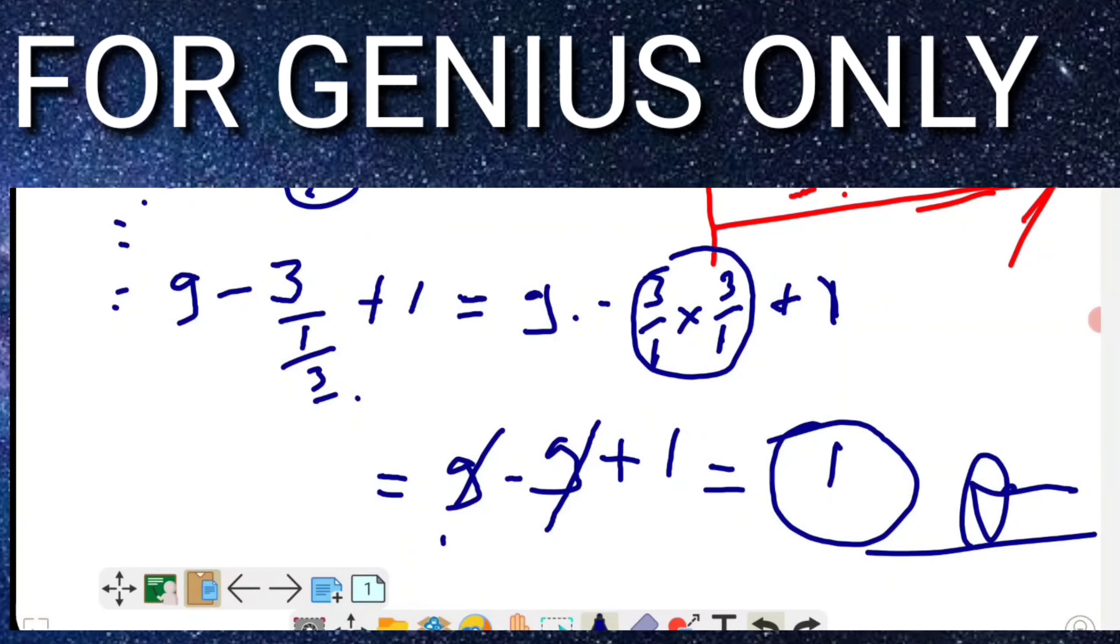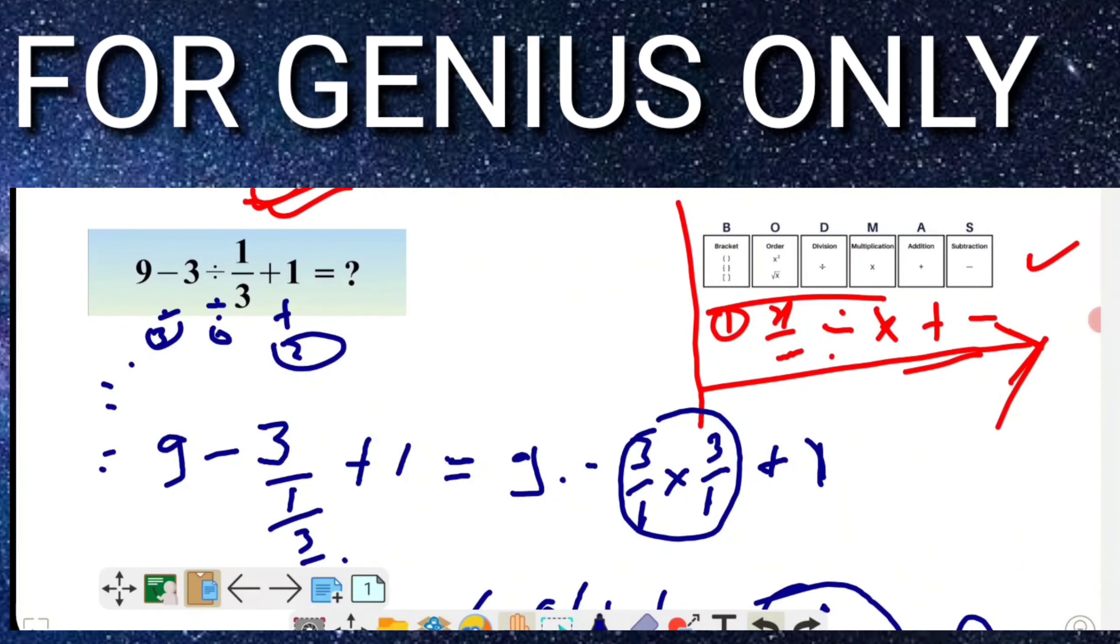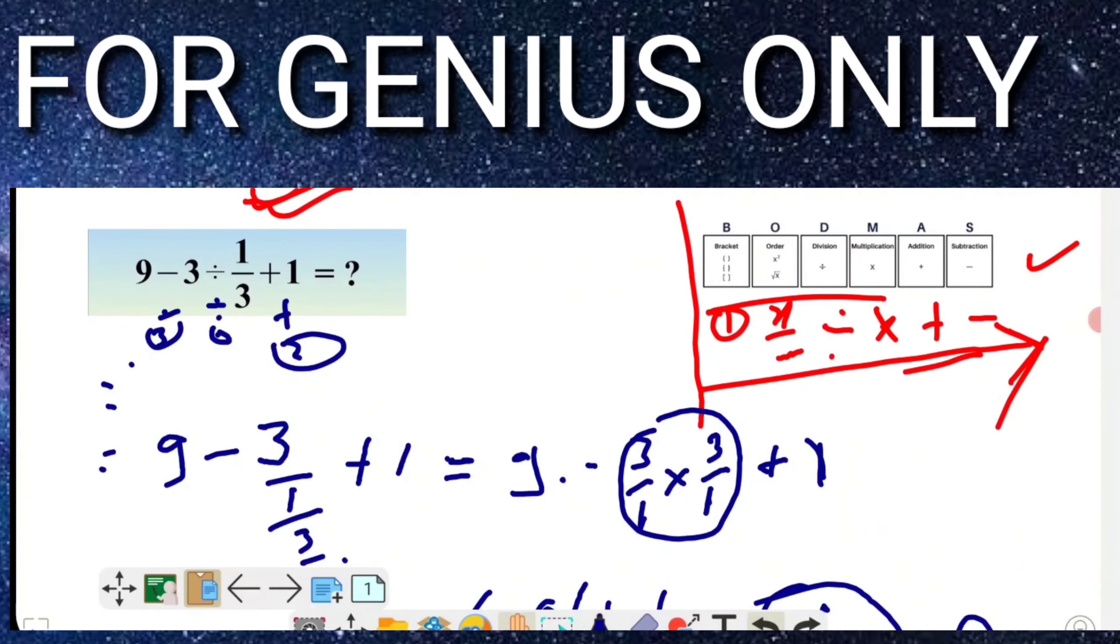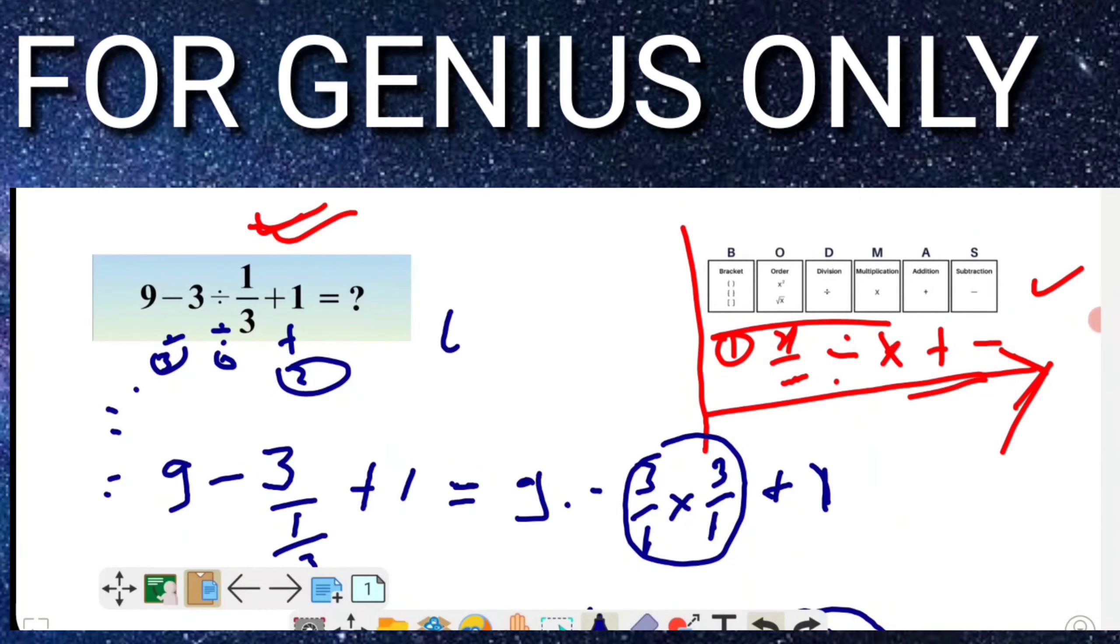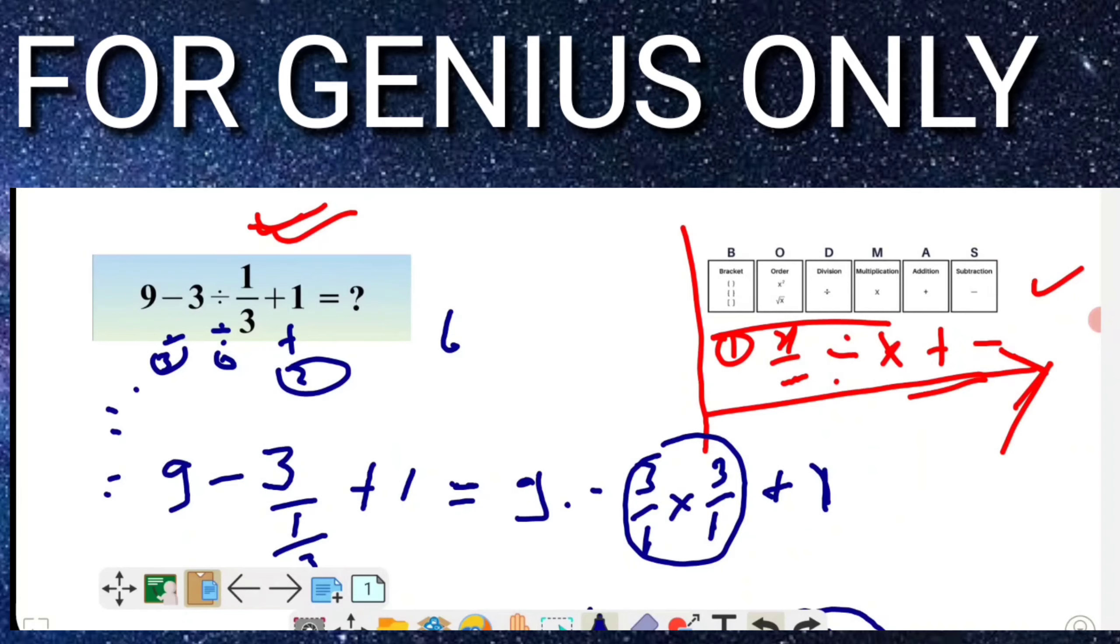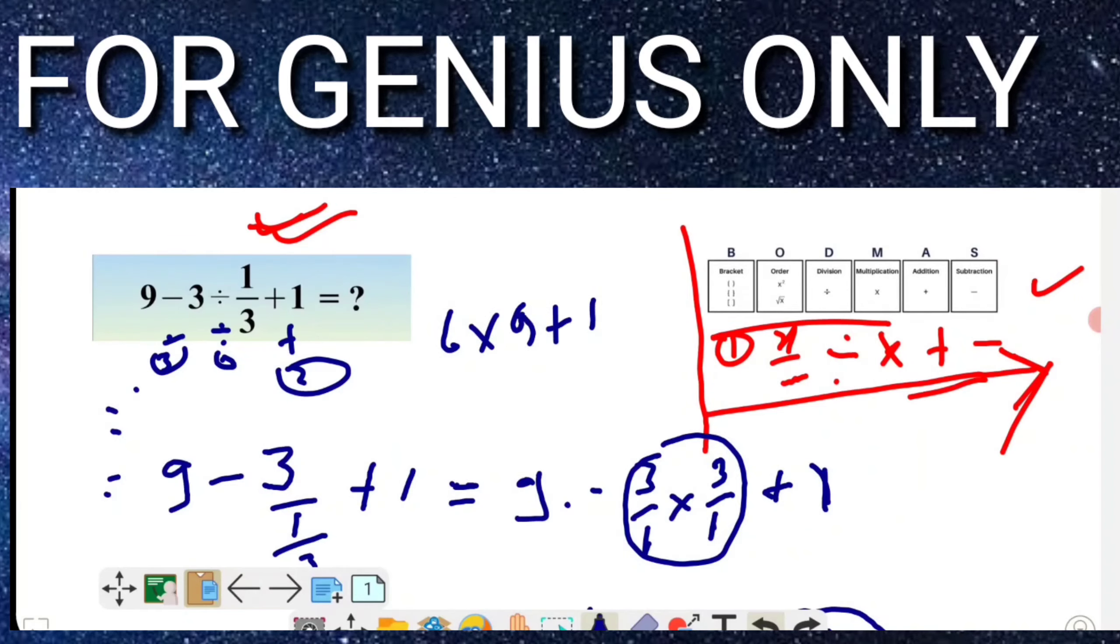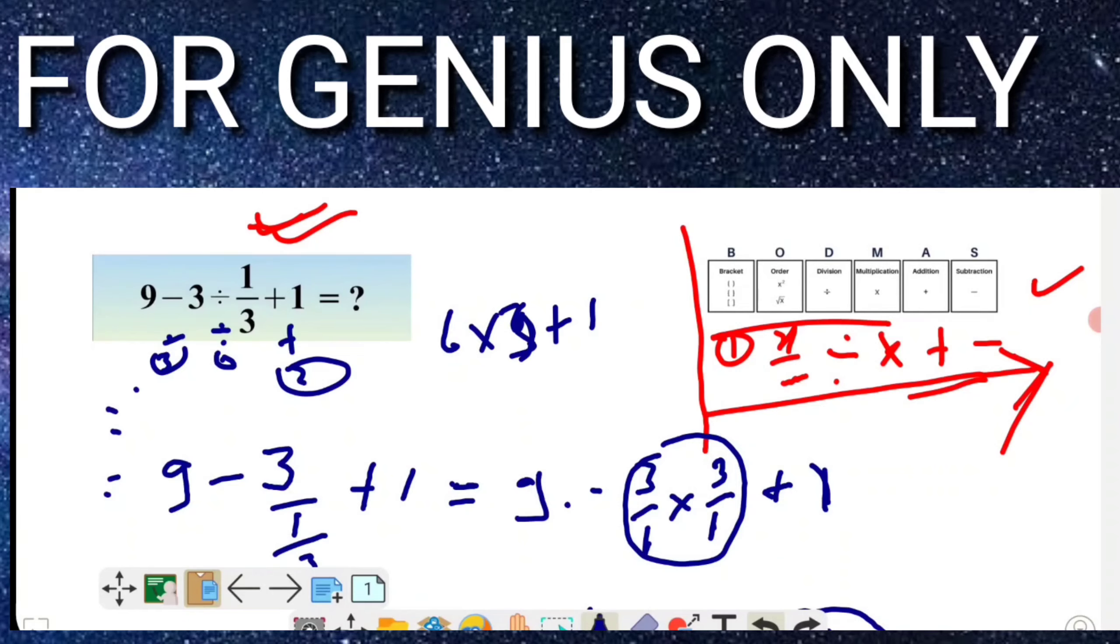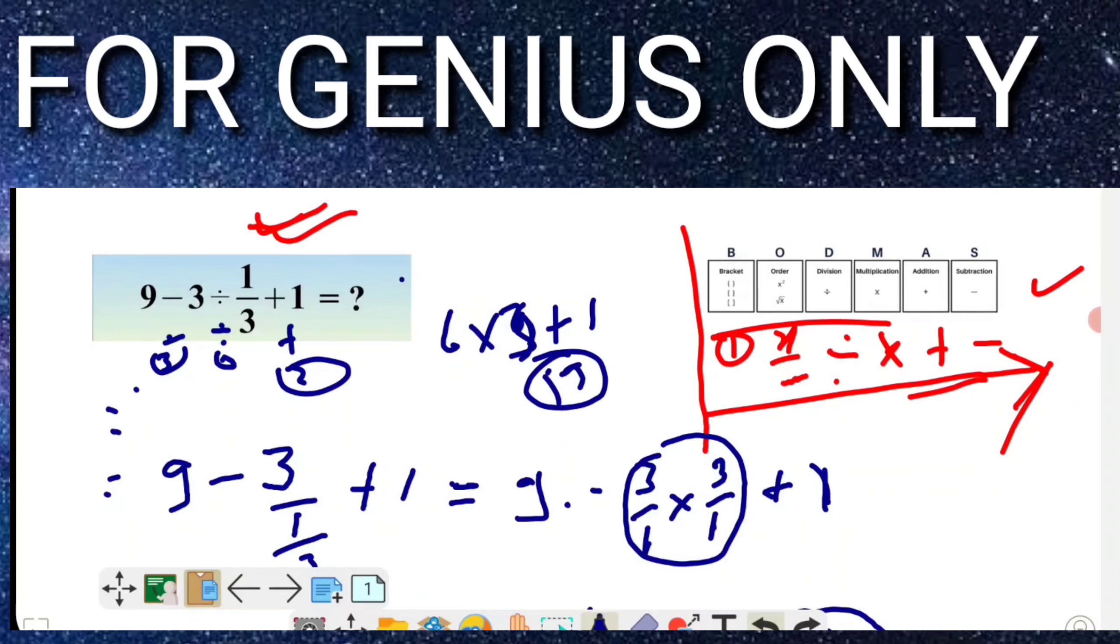I hope you follow the steps and you will get the exact answer. But most people doing this question wrong, they're doing like this one: 9 minus 3 is 6, and 6 divided by... 6 multiply with 9 and addition 1. 9 times 3 means 6 times 3 is 18, 18 plus 1 is 19. They will get the answer 19, but the exact answer of this question is 1.